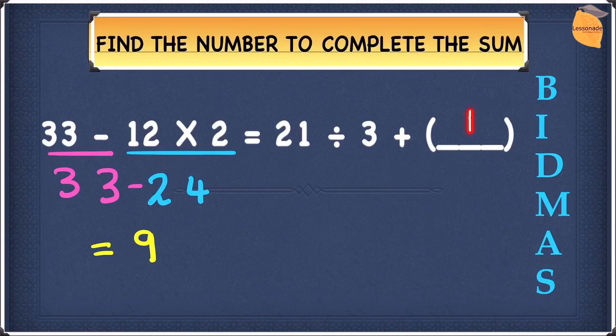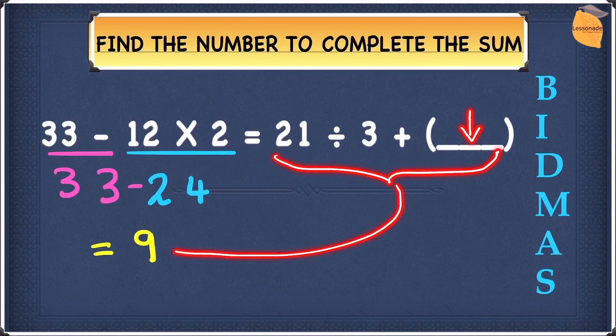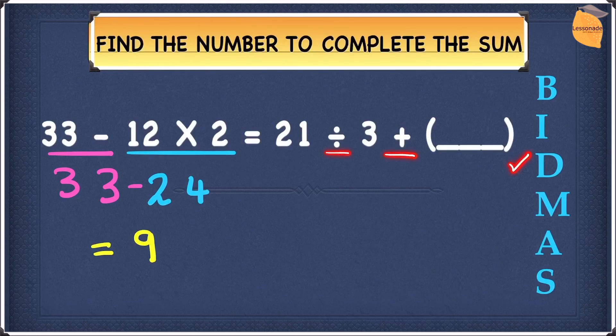Now we need to find the missing number on the right hand side. When we do this sum along with the missing number, it must give us 9. Let's start by looking at BIDMAS. We have division and addition. Since division is higher up, we do that first, then the addition.